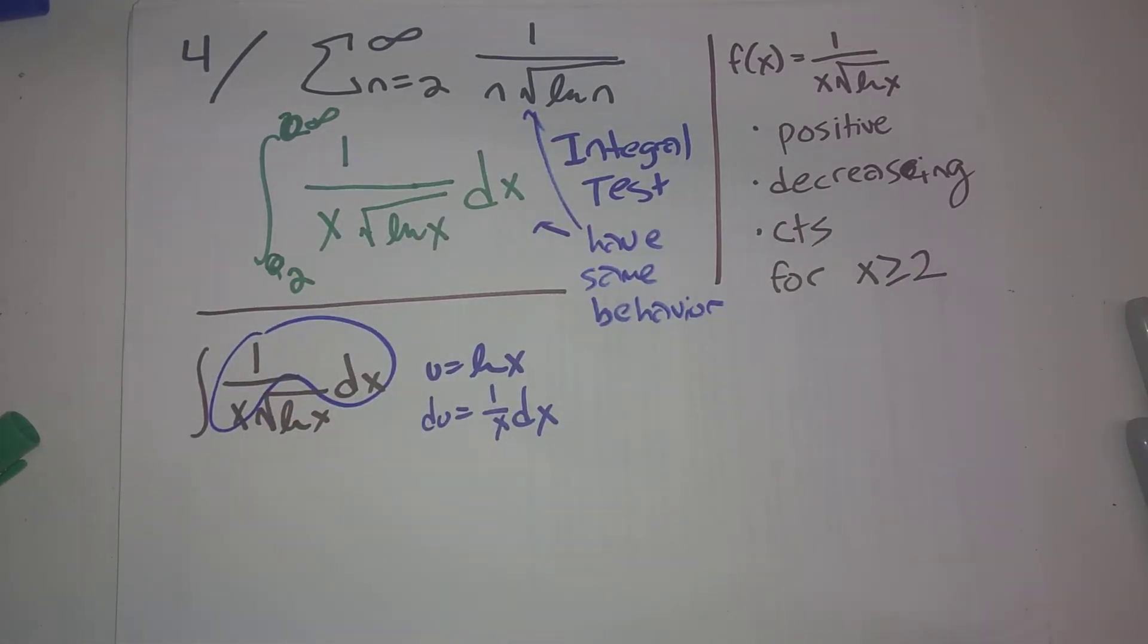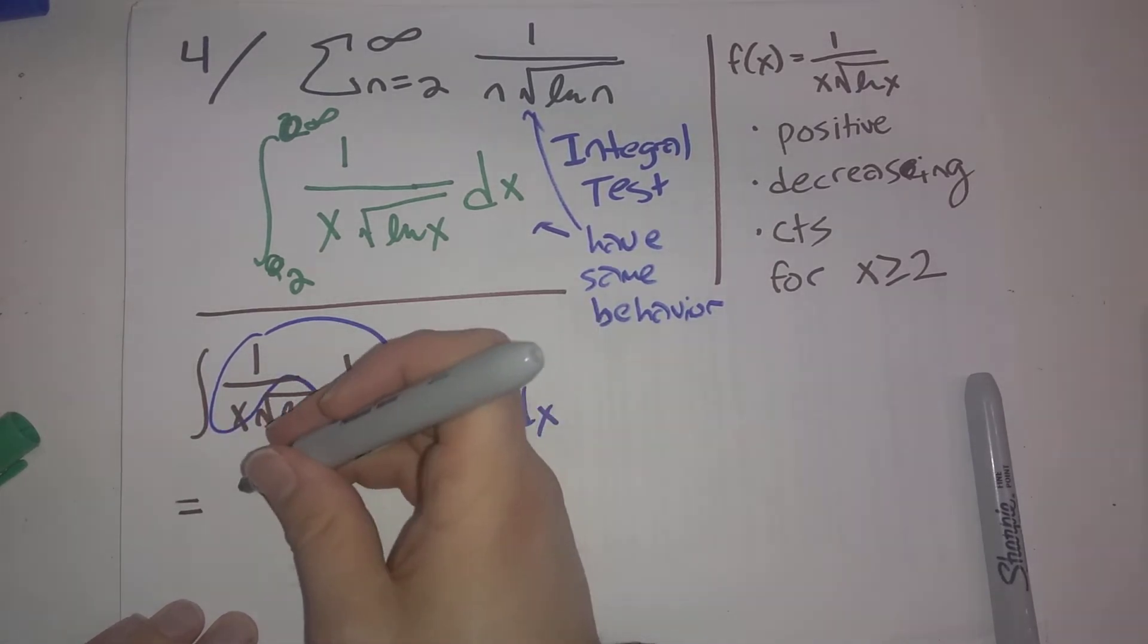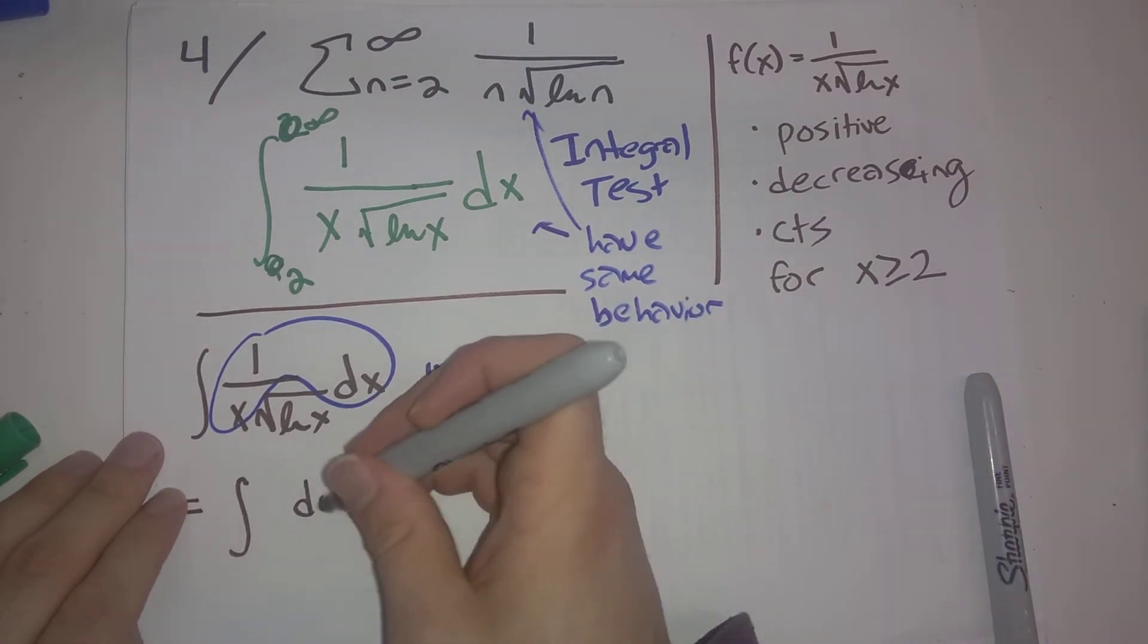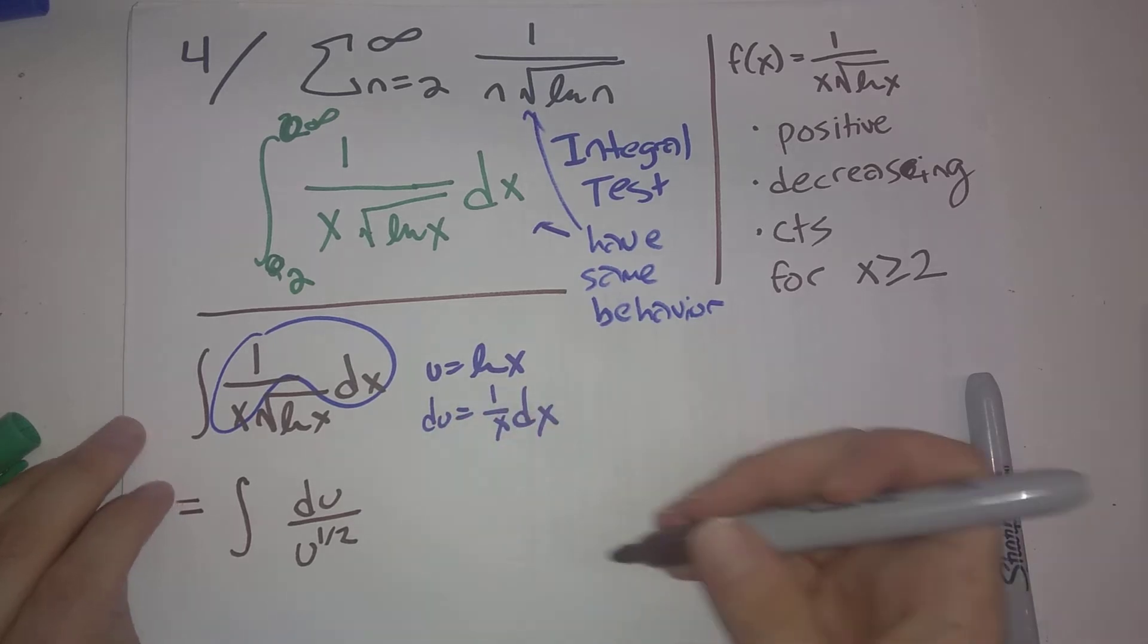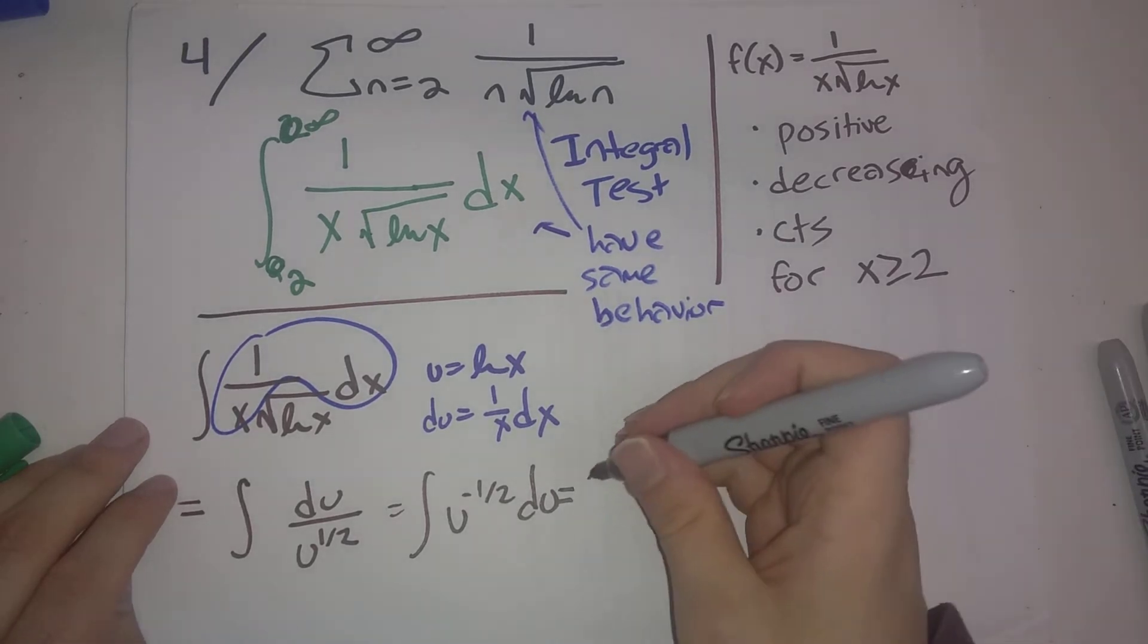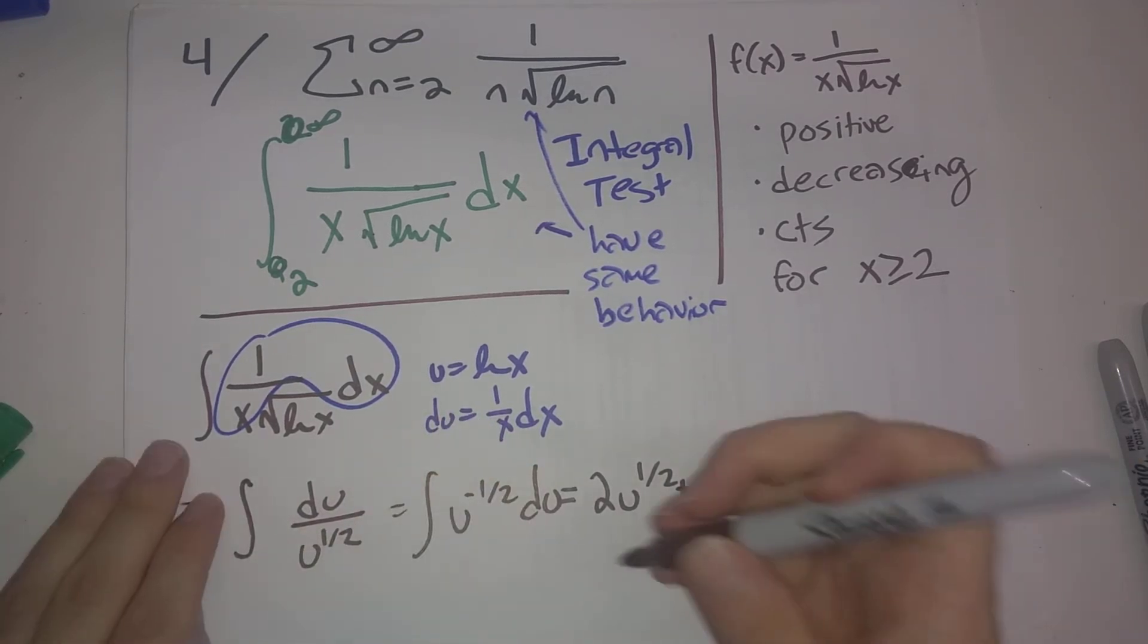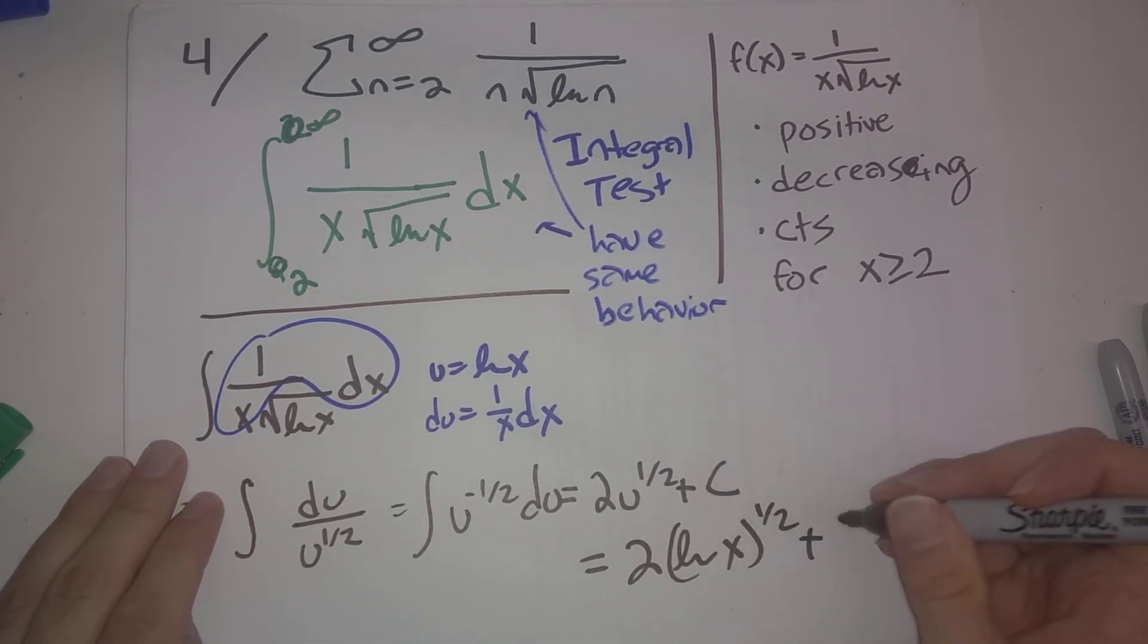So there is du, and so this ends up as the integral of du divided by square root of u, u to the 1 half. This is the integral of u to the minus 1 half du, and so we end up with 2u to the 1 half plus c. Of course, this is our final answer, we need to substitute back in 2 times natural log of x to the 1 half plus c.